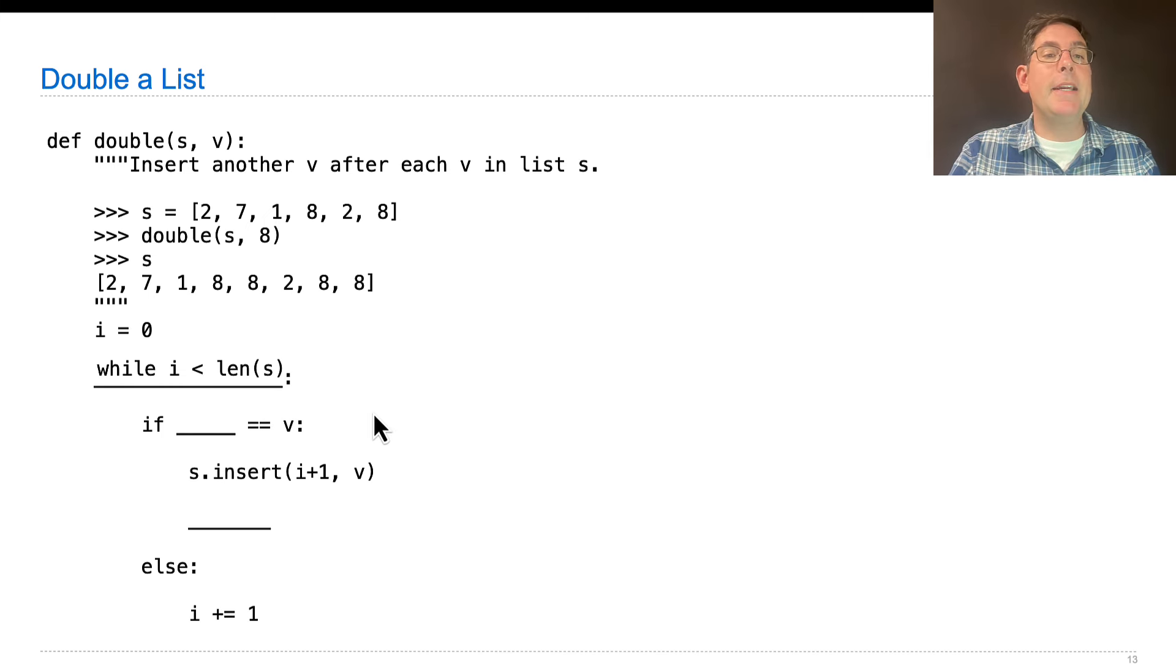We check to see if the element at index i is equal to v. If so, we insert another v just after it. For example, i is 0, then 1, then 2, then 3.